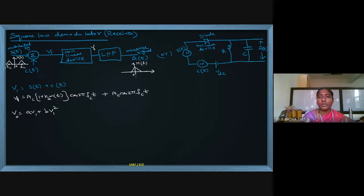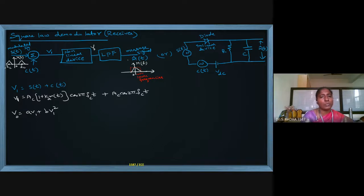The low pass filter will allow only lower frequencies. The lower frequencies are allowed, and all other higher frequencies are rejected. In the equation as well, higher frequencies will be rejected by the low pass filter, and we will get back m(t) as the output of the low pass filter. This is how the square law demodulator works.